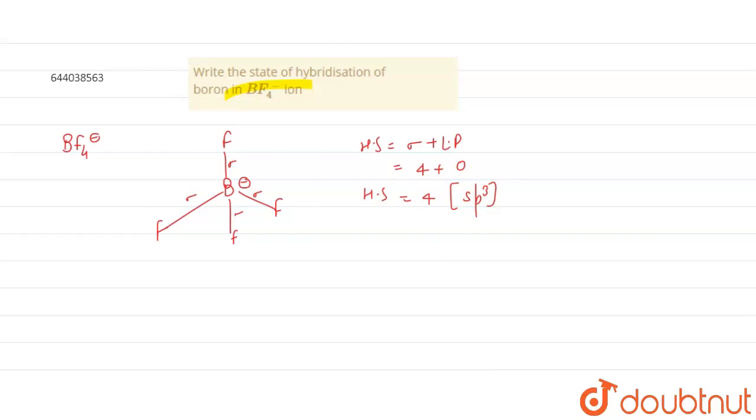the boron is sp3. That means hybridization of BF4 minus is sp3. The geometry is tetrahedral.